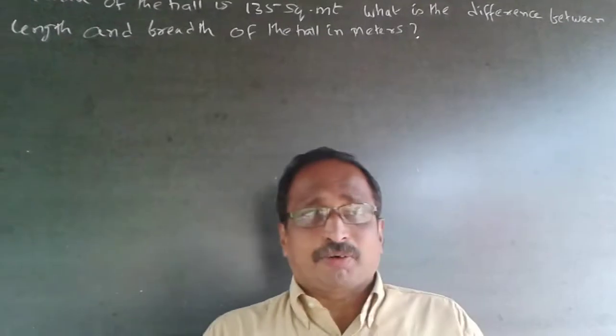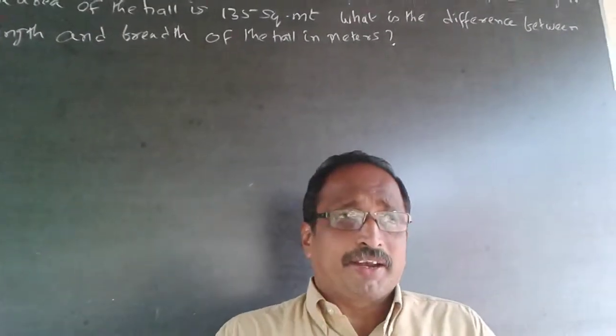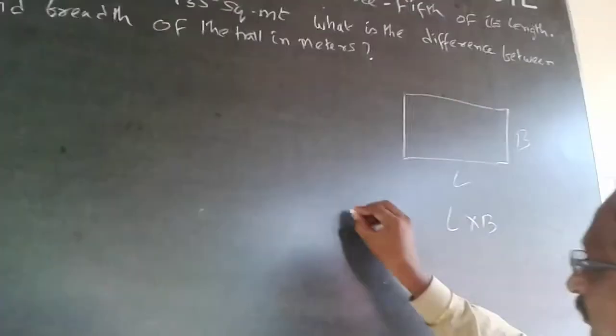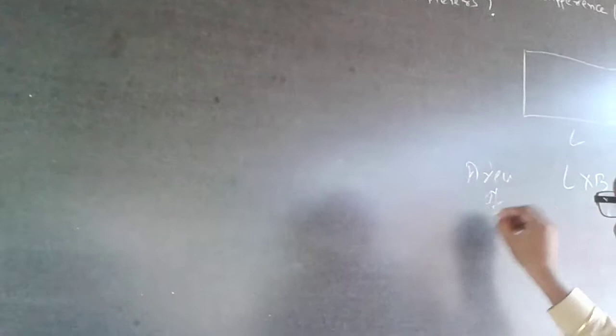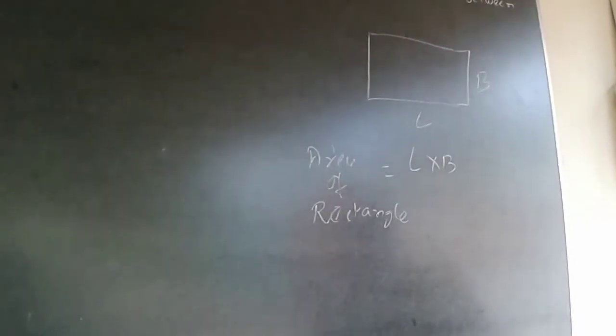This is a very easy problem about the area of a rectangle. Here is the rectangle — this is the breadth and this is the length. The area of a rectangle is length times breadth.